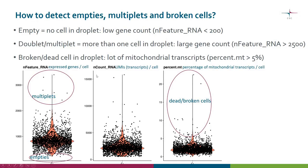On the other hand, it can happen that several cells end up in one droplet — perhaps two cells, giving a doublet, or even more giving a multiplet. This is also a problem because we only want one cell. The way to detect this is to look at the number of genes expressed; the default threshold is 2500. You can see that some cells are really high up in the plot — these are the potential multiplets.